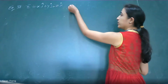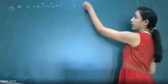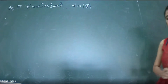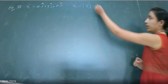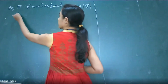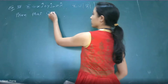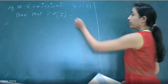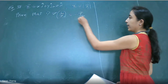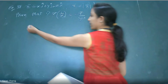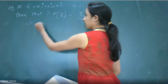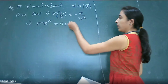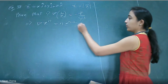We define r̄ = x î + y ĵ + z k̂ as the position vector at any point, and r is simply the magnitude of r̄. We have to prove two identities: first, ∇(1/r) = -r̄/r², and second, ∇(rⁿ) = n·r^(n-2)·r̄.